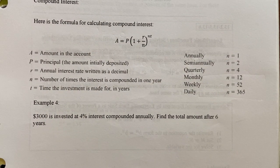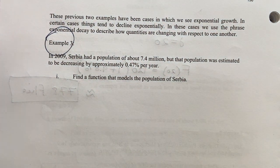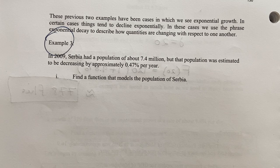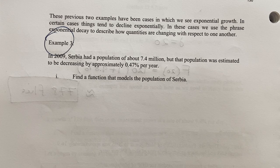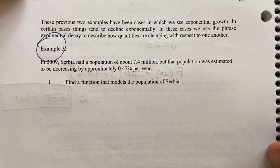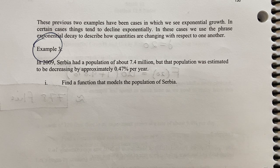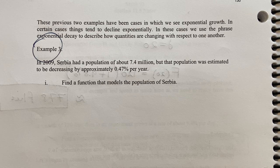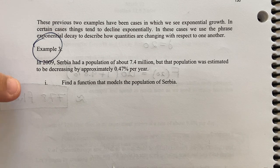Let's try one where things are decreasing. It says, in 2009, Serbia had a population of about 7.4 million, but that population was estimated to be decreasing by approximately 0.47% per year. I think they were going through a troublesome period in 2009. There was some conflicts, civil war practically going on. So people were unfortunately either being killed or leaving.